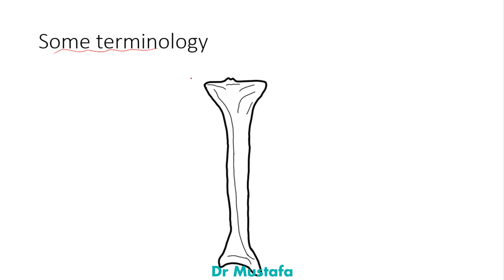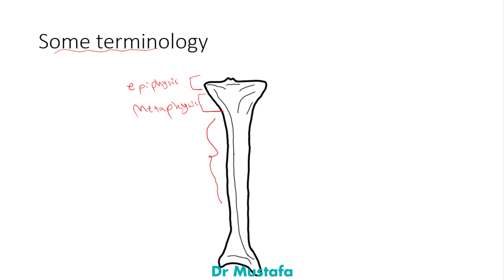The epiphysis is the part of the bone that articulates with the joint. The metaphysis is the part next to the epiphysis. The diaphysis is the part that forms the shaft of the bone.